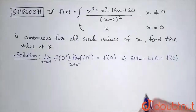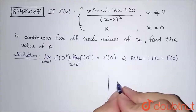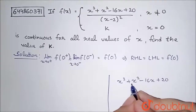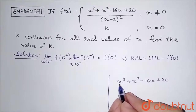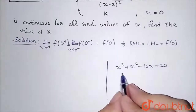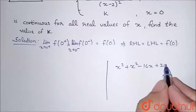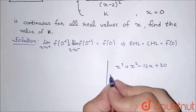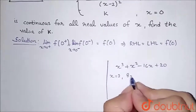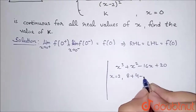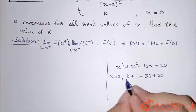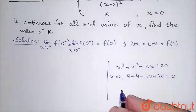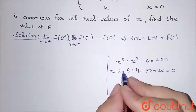For x not equal to 0, the numerator is a cubic polynomial: x cubed plus x squared minus 16x plus 20. I'll try to factorize it. Putting x equal to 0 gives 20 — not zero. Putting x equal to 1 gives 1 plus 1 minus 16 plus 20 equals 6 — not zero. Putting x equal to 2 gives 8 plus 4 minus 32 plus 20 equals 0 — so x minus 2 is a factor.